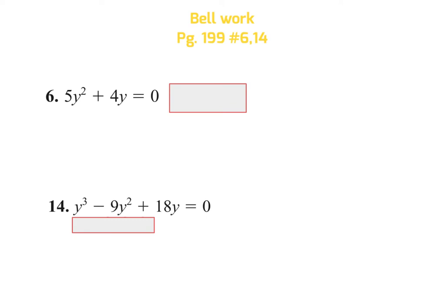Your first step in factoring is always to look for something in common that you can take out. If I look at this first one, I'm going to look at the numbers and say five and four don't have anything in common other than one. Then I'm going to look at my variables — you can see that you could take a y out. I'm going to pull the y out in front, and then I'll have five y left over and four with no y left over.